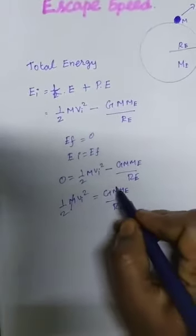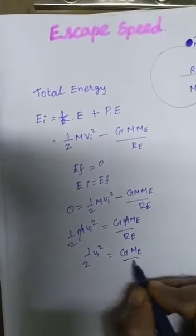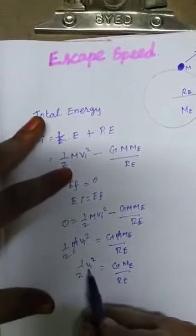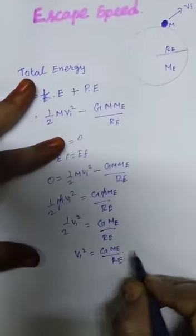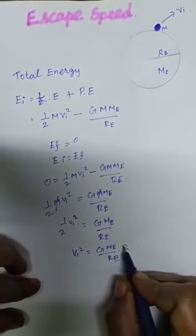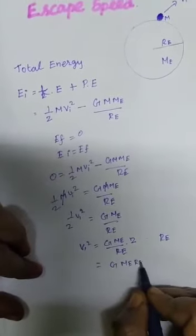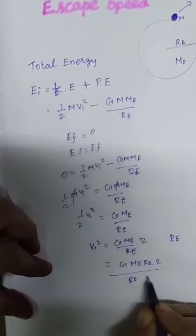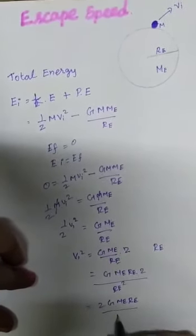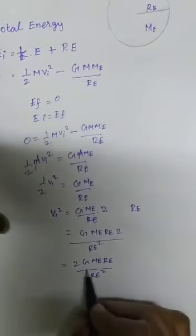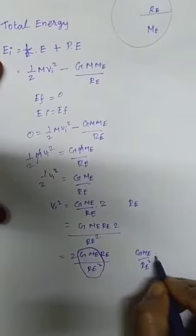So this term comes to the other side: 1/2 M V_I squared equals G M M_E divided by R_E. Here we cancel capital M from both sides. So 1/2 V_I squared equals G M_E divided by R_E. This is the escape speed. So V_I squared equals 2 G M_E divided by R_E. Now multiplying both numerator and denominator by R_E, we get 2 G M_E R_E divided by R_E squared. We note that G M_E divided by R_E squared equals small g.